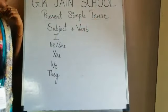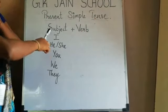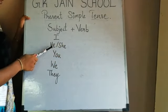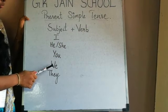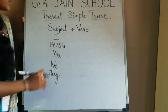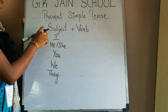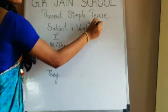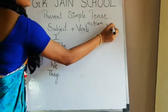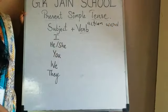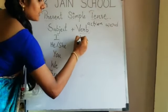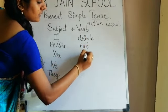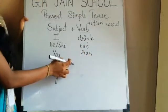How to write a present simple tense? Subject plus verb. Subjects include I, he, she, you, we, they. Even names like Kavita and Rahul come under subject. Verb is an action word. Examples for verb: drink, eat, run — these all come under verb.